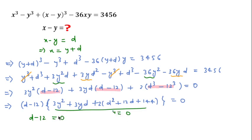But we need to find only x minus y, so I will write d minus 12 equal to 0, this means d equal to 12. And we already considered d equal to x minus y, so we can say x minus y equal to 12. This is the right answer for this question. Thanks for watching and please like, share and subscribe this channel.